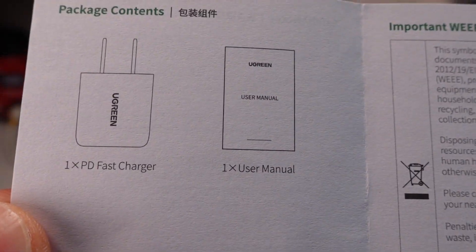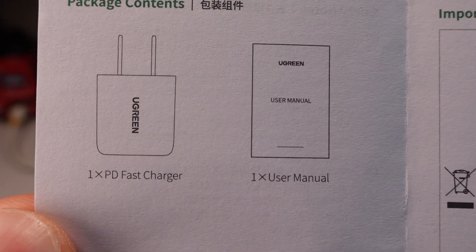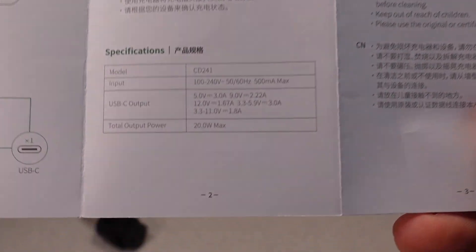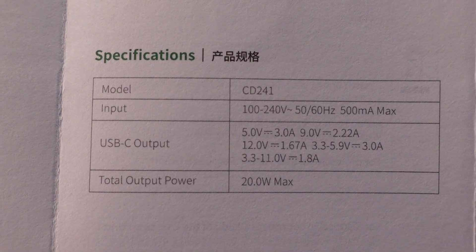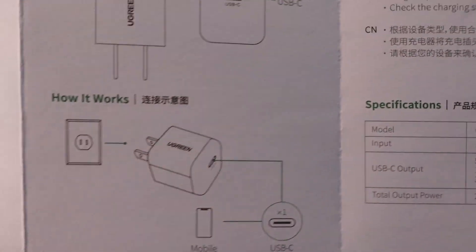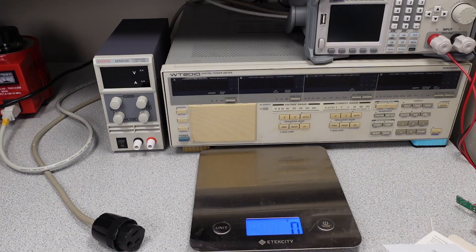Alright, let's take a look at the user manual. It can tell you what's in the box, the user manual and the adapter. What a surprise. On the other side, we do have the specifications, so it does tell you what it can do, which is nice. Some of these do not include that. Let's go ahead and get the product weights.